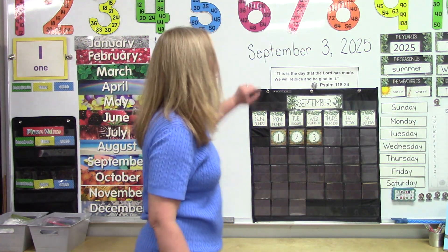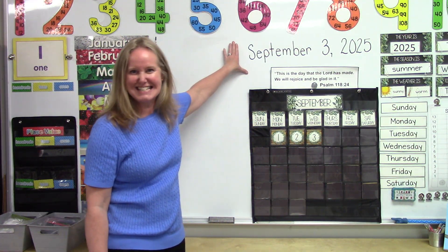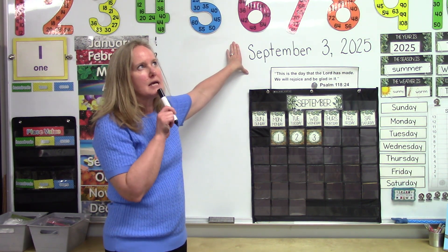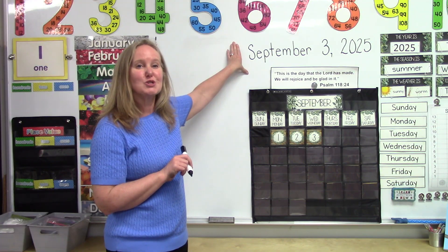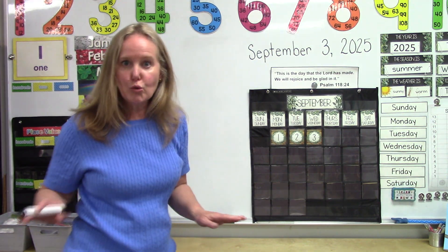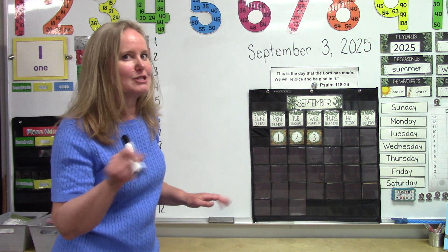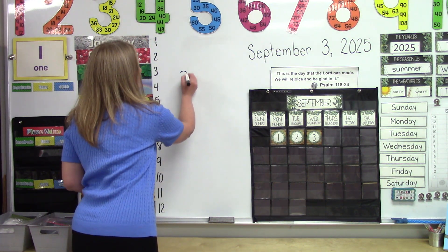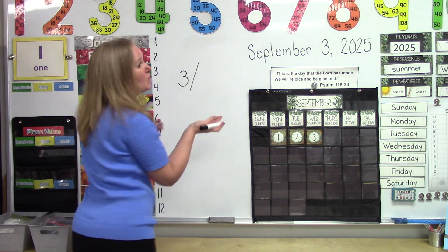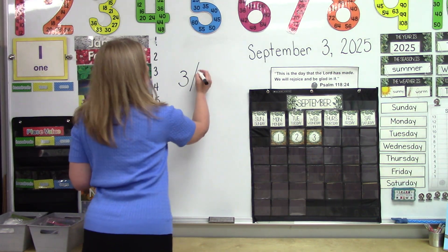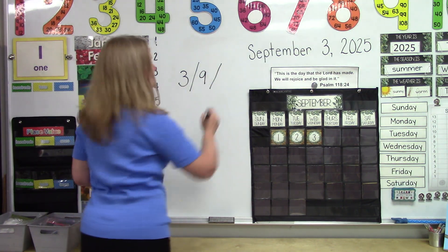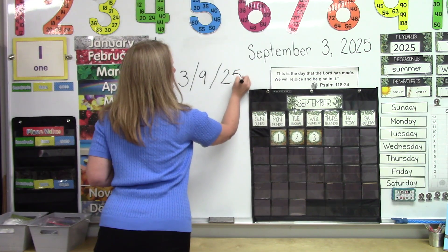I already have the date written down for the first day of my school year. It is September the 3rd, 2025. But I could write that only using numbers. This is what it would look like: 3, then a slash or a slanty line, 9, and another slanty line, and then the number 25.